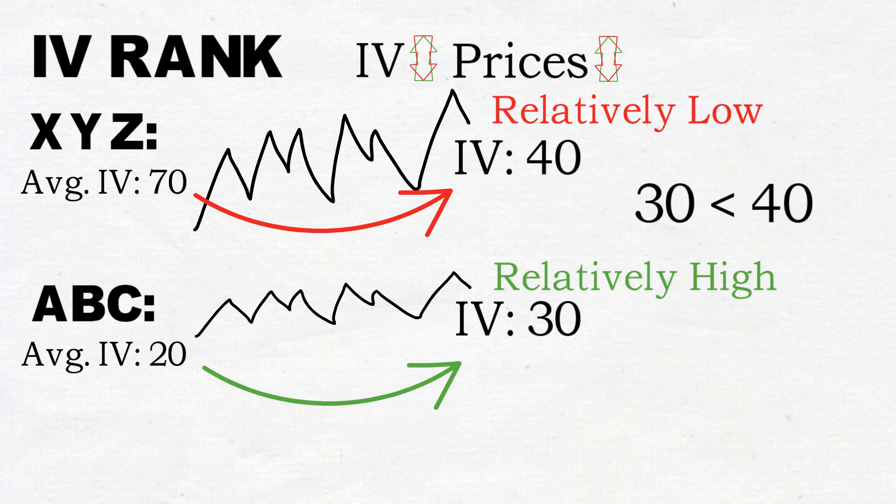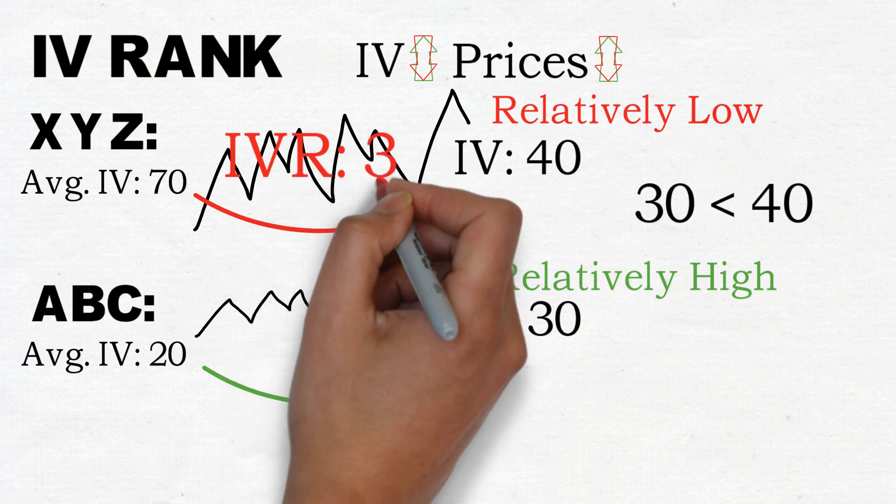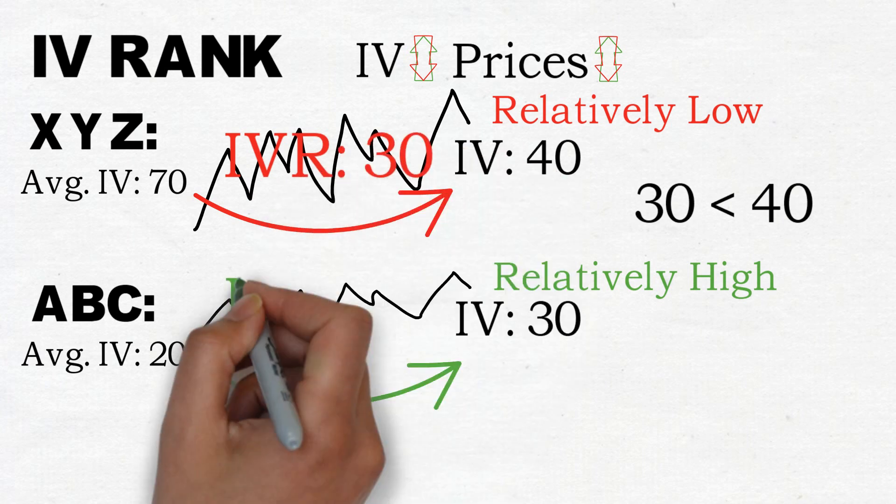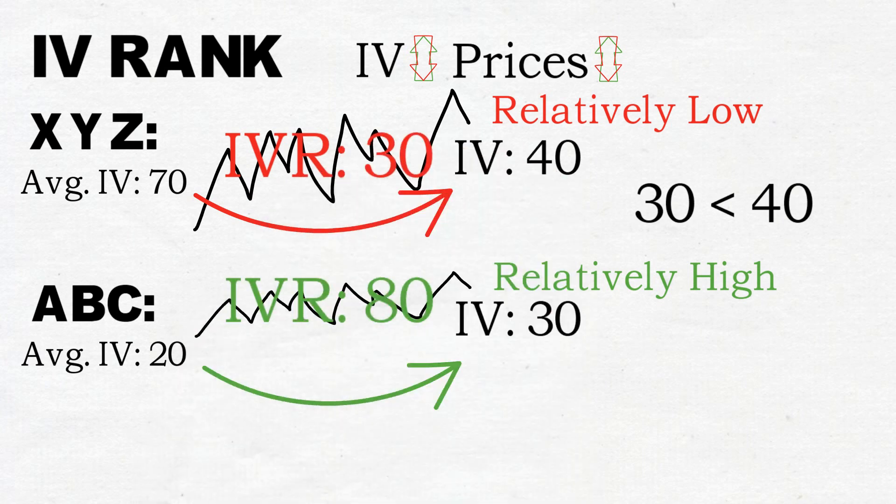To solve this problem we can use implied volatility rank. IV rank looks at the past year of implied volatility data of a stock and then tells you how the current level of IV is relative to the past 365 days.